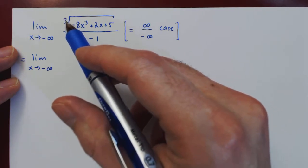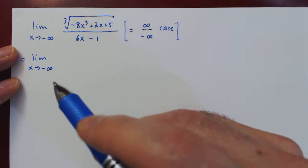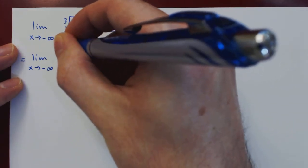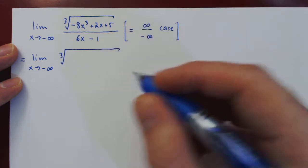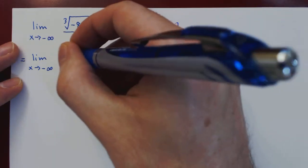Well, since we have a cube root, we'll first factor the dominant power of x from inside the cube root. The largest power of x inside the cube root is x cubed, so we factor it.